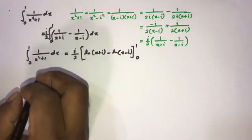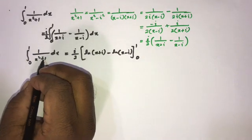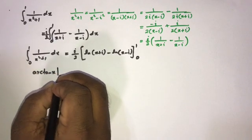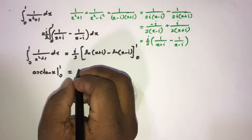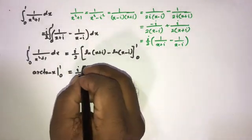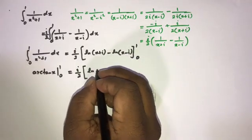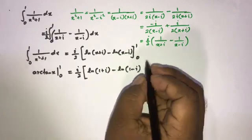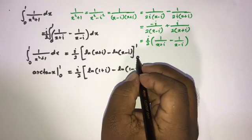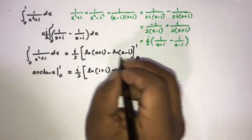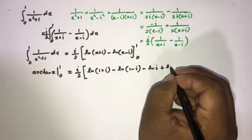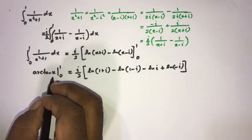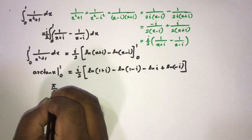We know the left side is arctan(x) evaluated from 0 to 1. Plugging in 1 gives ln(1 plus i) minus ln(1 minus i), and plugging in 0 gives ln(i) minus ln(minus i). So we have arctan(1) equals i over 2 times [ln(1 plus i) minus ln(1 minus i) minus ln(i) plus ln(minus i)].